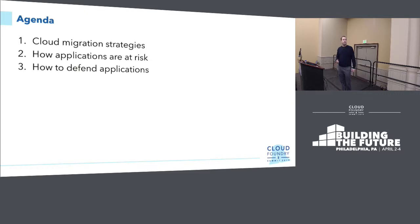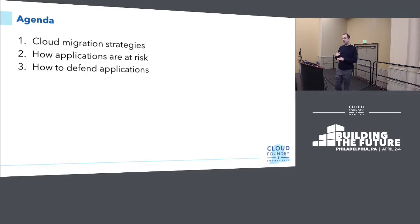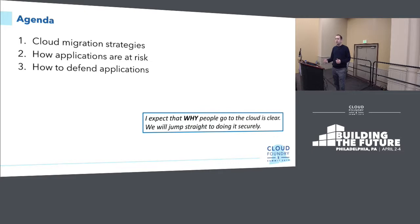The way I want to structure this talk about securing a cloud migration is to first talk about a couple different cloud migration strategies that people use to get their applications up into the cloud. Then I want to talk about how those applications are at risk when they're up in the cloud, and focus on mechanisms to defend those applications at the application layer itself, not necessarily at the infrastructure layer, because it's the applications that are generally attacked since they have a lot of that data.